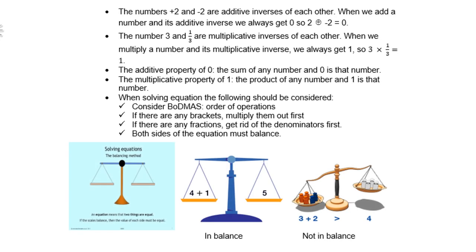The numbers positive 2 and negative 2 are additive inverses of each other. When we add a number and its additive inverse, we always get 0, so 2 plus negative 2 is 0. The number 3 and a third are multiplicative inverses of each other. When we multiply a number and its multiplicative inverse, we always get 1, so 3 times a third is 1.